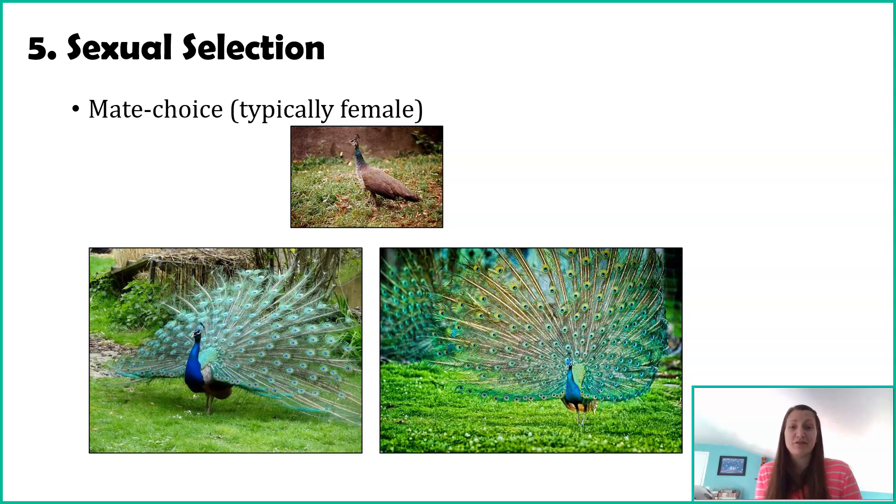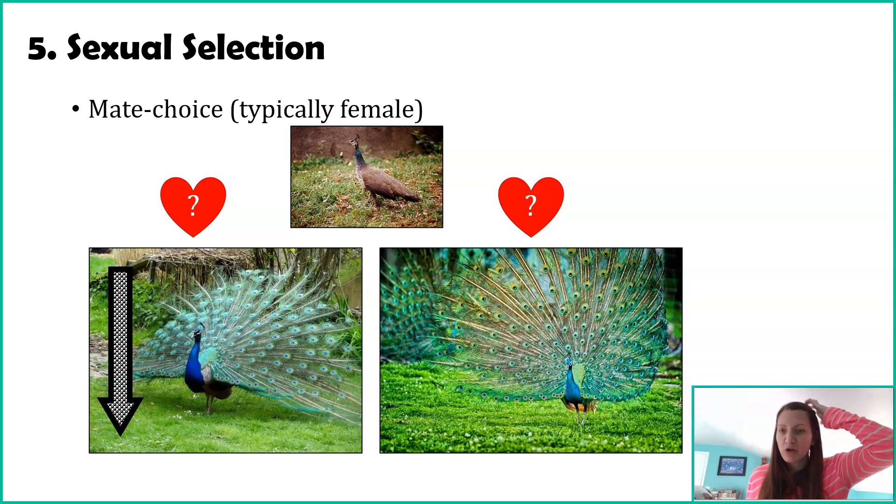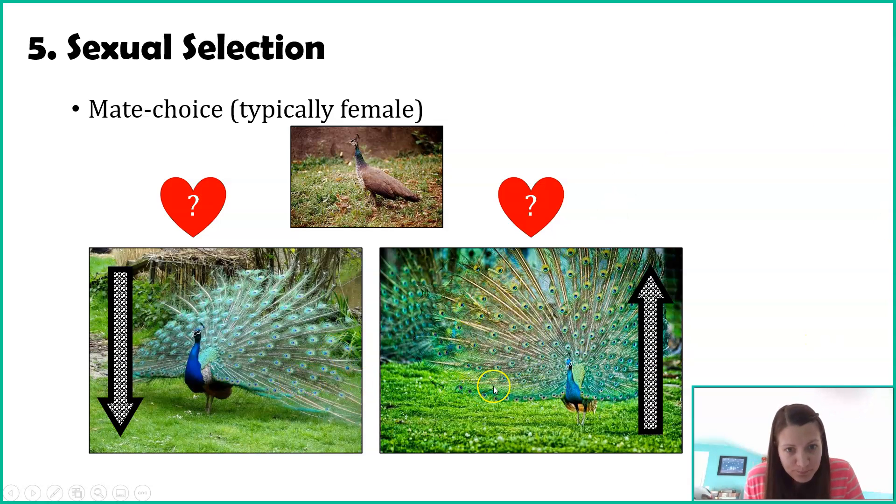This can happen in the inverse as well. It can be males choosing females. There's actually a study, just to tell you a little bit more about this peacock example, a study tried to quantify showiness. Like what exactly was being chosen for by the female. The study found a correlation between females choosing males that had more circles on their tail feathers.